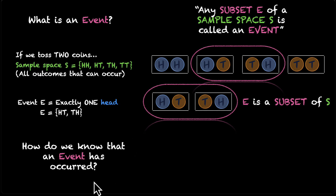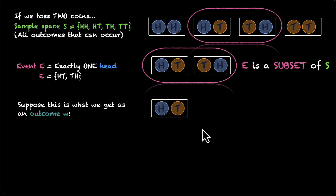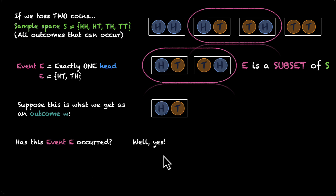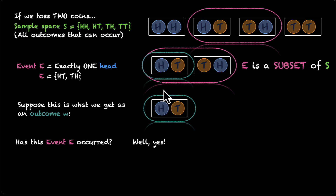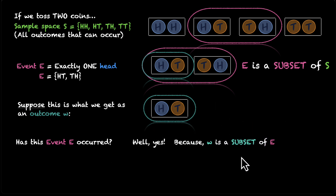How do we know whether an event has occurred or not? In this video, that's what we are going to find out. So let's say this is our event E, and this is your outcome W — this is what you get. You toss two coins and you get the first one as heads and the second one as tails. Has this event E occurred? Well, yes, the event E has occurred. The first coin as heads and the second coin as tails — this is something that you can see here as well. Do you notice what's going on? E was a subset of S, and here your outcome W is a subset of your event E. It's a very formal way of saying that what we have here is also here as well.